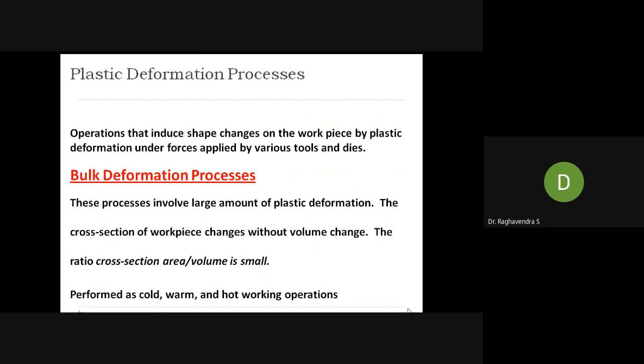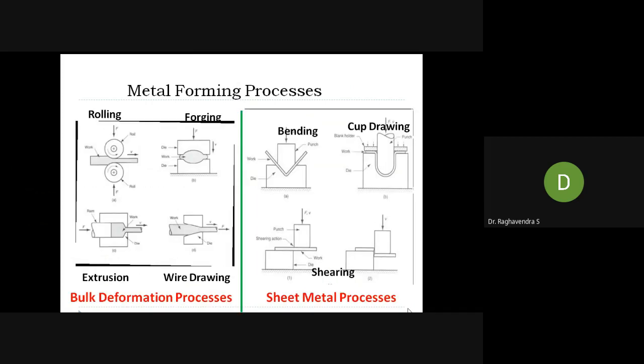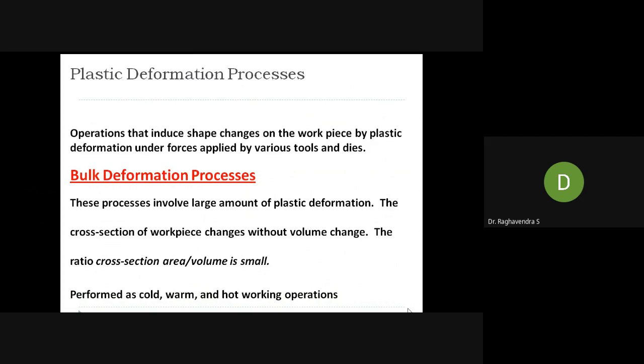In the bulk deformation process, a large amount of plastic deformation is involved. The cross-section of the workpiece changes without volume change. The ratio of cross-sectional area to volume is very small. It is performed as cold, warm, and hot working operations. Rolling and forging show how bulk deformation changes the entire geometry from one shape to another, but the volume does not change — only the cross-section changes.